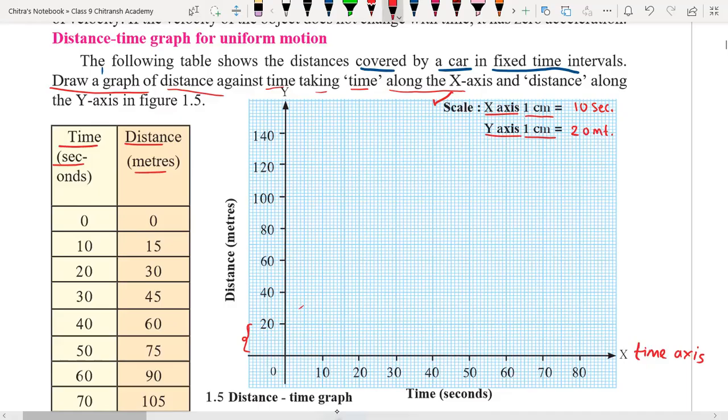Now we have to plot each coordinate on the graph. See, we have 0 and 0. So the point will be on the origin over here. Then we have 10 and 15. So on 10 and 15 is here. That will be 10 and in between over here. That point will be here.